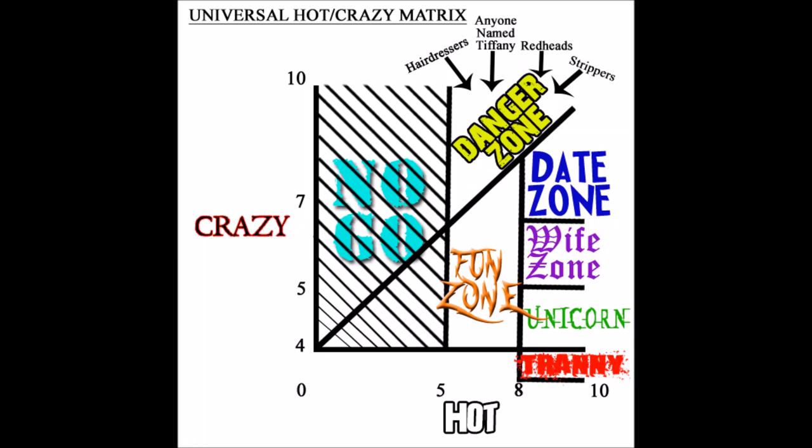Okay, so this is the Universal Hot Crazy Matrix. It's everything a young man needs to know about women. I've developed this on my own over 46 years living on the earth. So, this is how it works. You have your crazy axis and your hot axis. Hot is as usual measured from 0 to 10. We're all familiar with that.